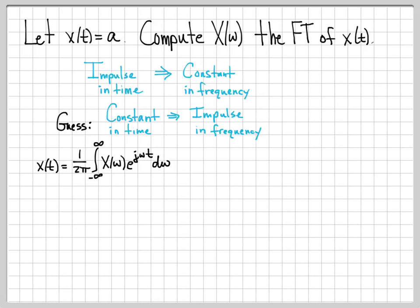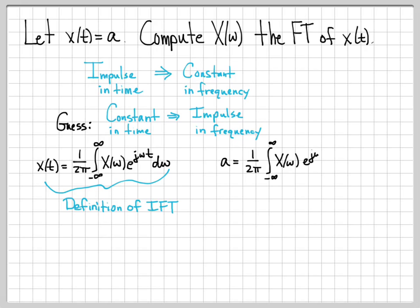Let's start with the definition of the inverse Fourier transform: x of t equals 1 over 2 pi, the integral from minus infinity to infinity of x of omega times e to the j omega t, d omega. For this problem, x of t equals the constant a, so plugging in, we have a equals 1 over 2 pi times that integral expression. The question is: what is x of omega? We don't know, and we're solving for it.